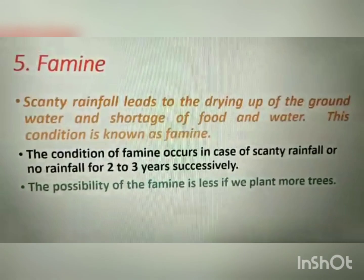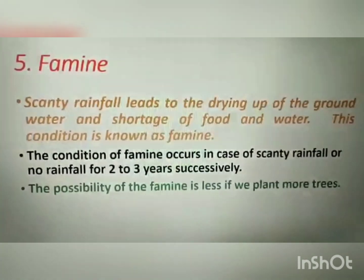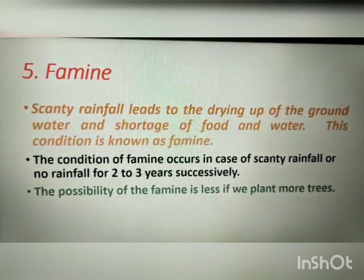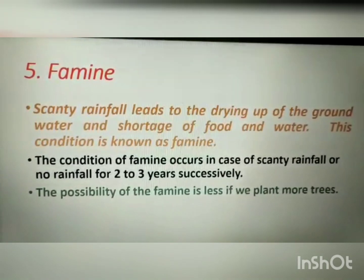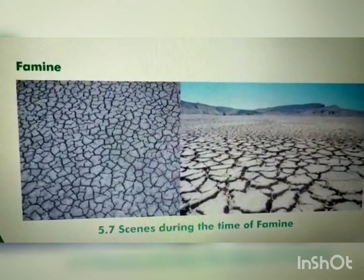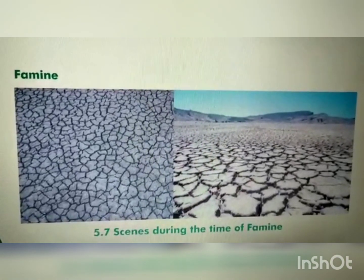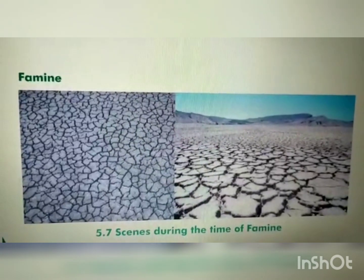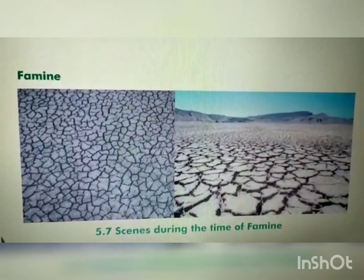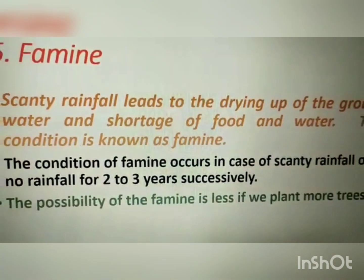Our next topic is famine, caused due to changes on the upper surface of the earth. Scanty rainfall leads to the drying up of groundwater and shortage of food and water — this condition is known as famine. See the picture: the land has dried up and cracks can be seen. You can compare these cracks to the cracks on your skin in winter when there is a shortage of moisture.